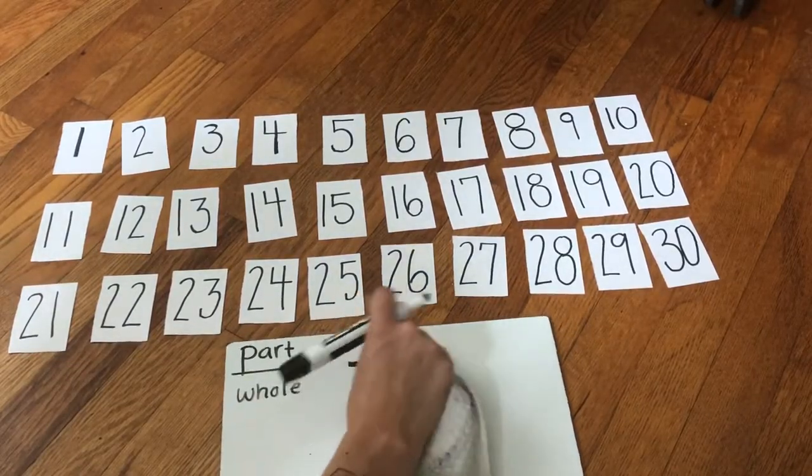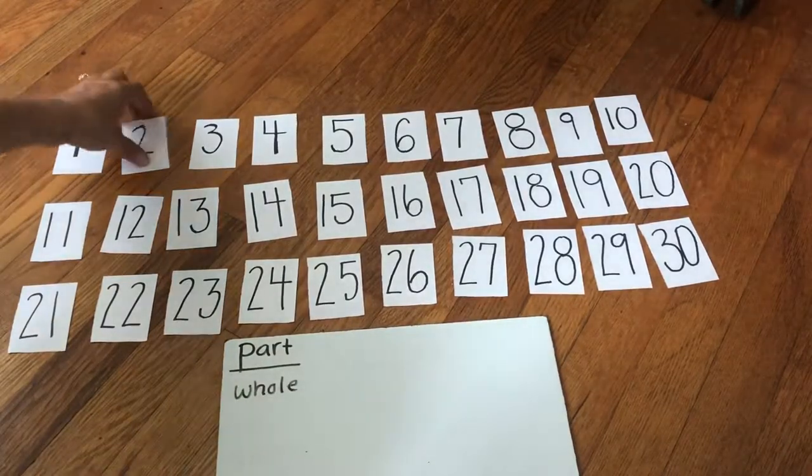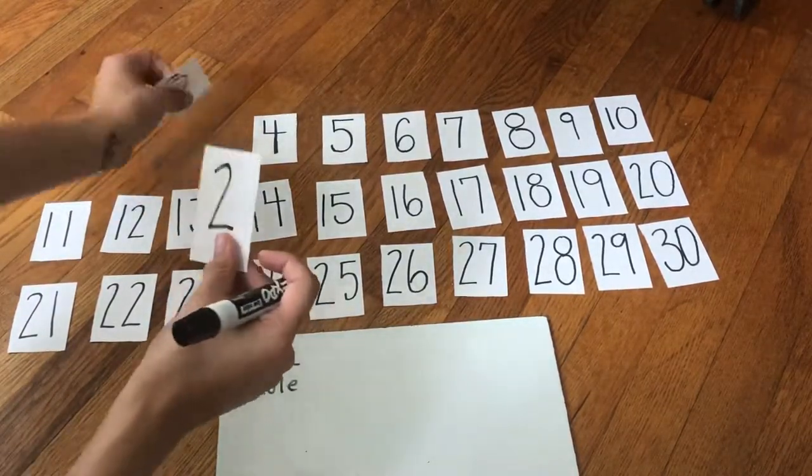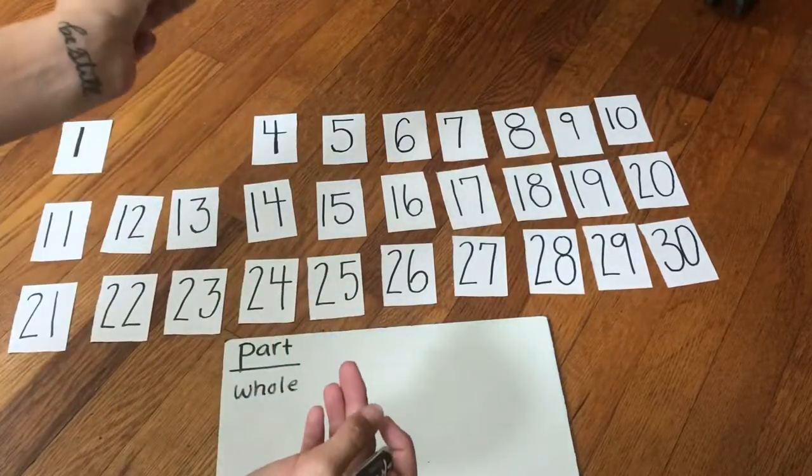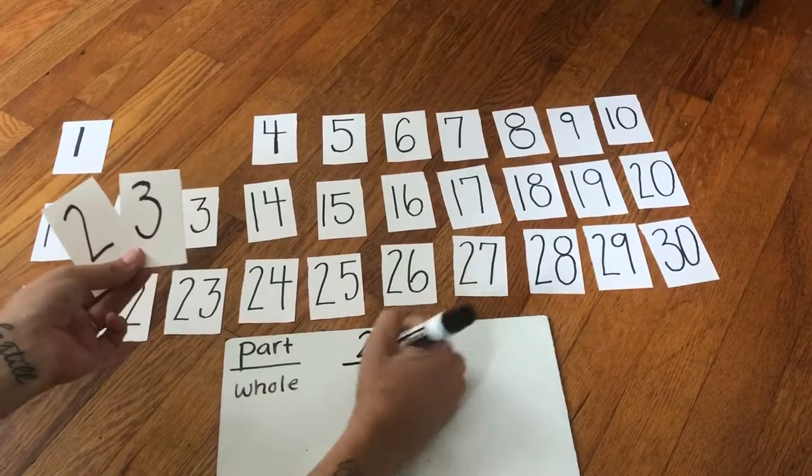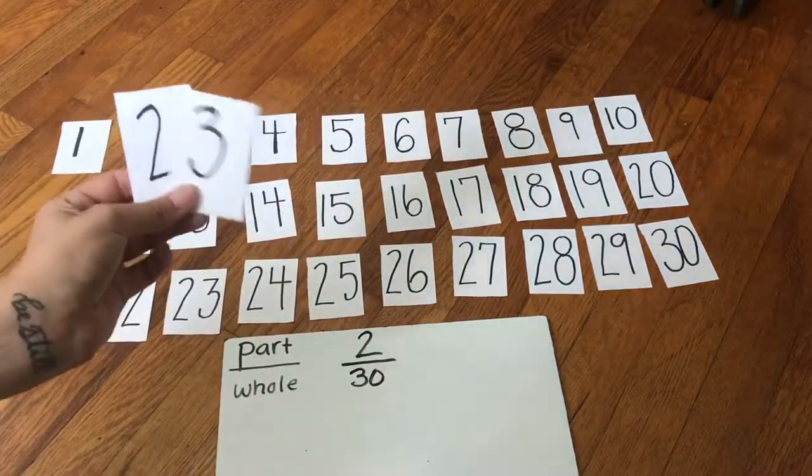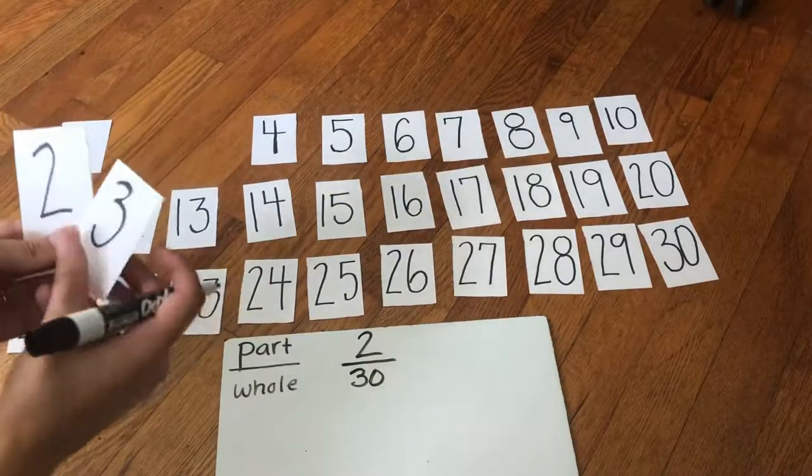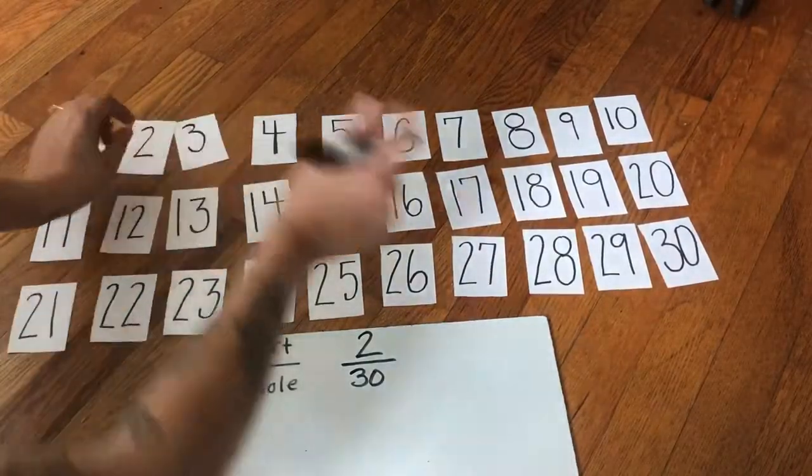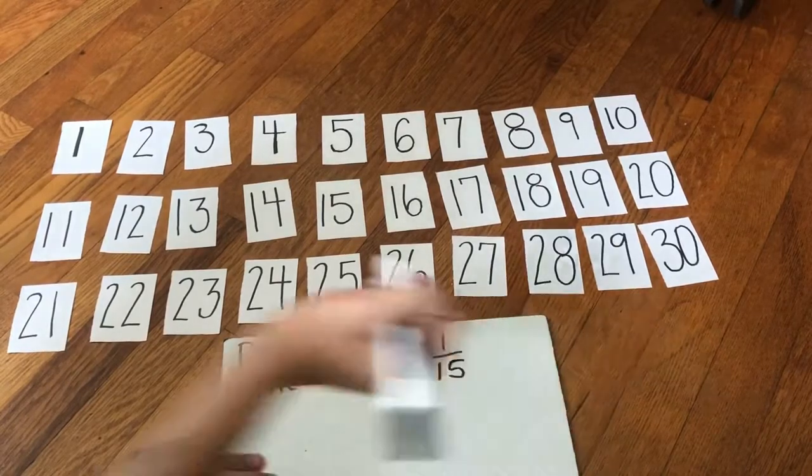The next one says, what is the probability of picking two and three? So I have two and three. Well, I have two cards here. So that's the part that I could pick and there's 30 cards in total. So the probability of picking two or three is two out of 30. And I can simplify that down to one fifteenth.